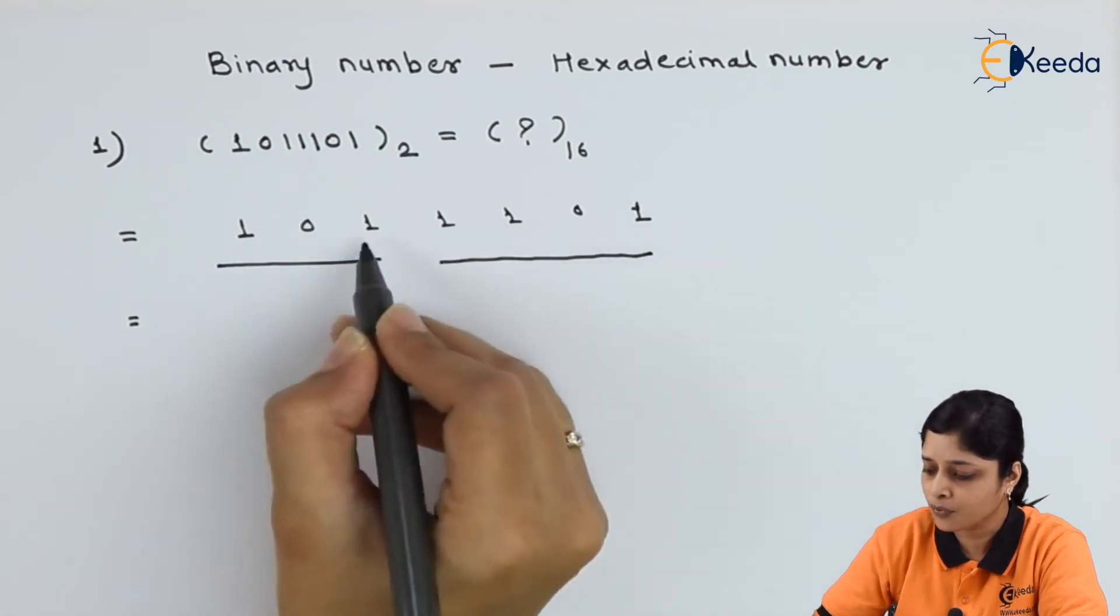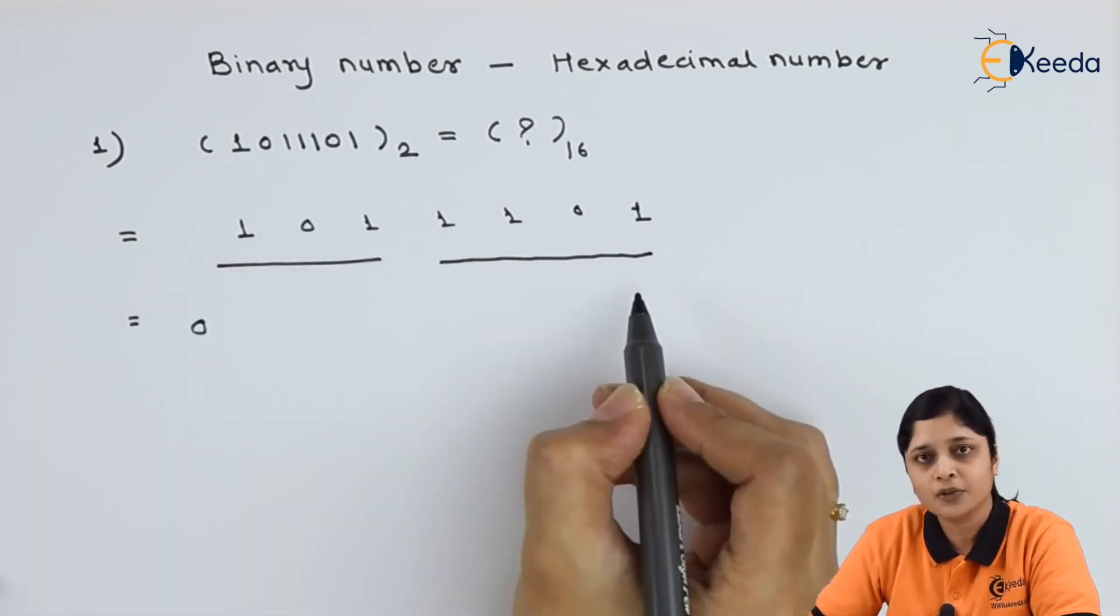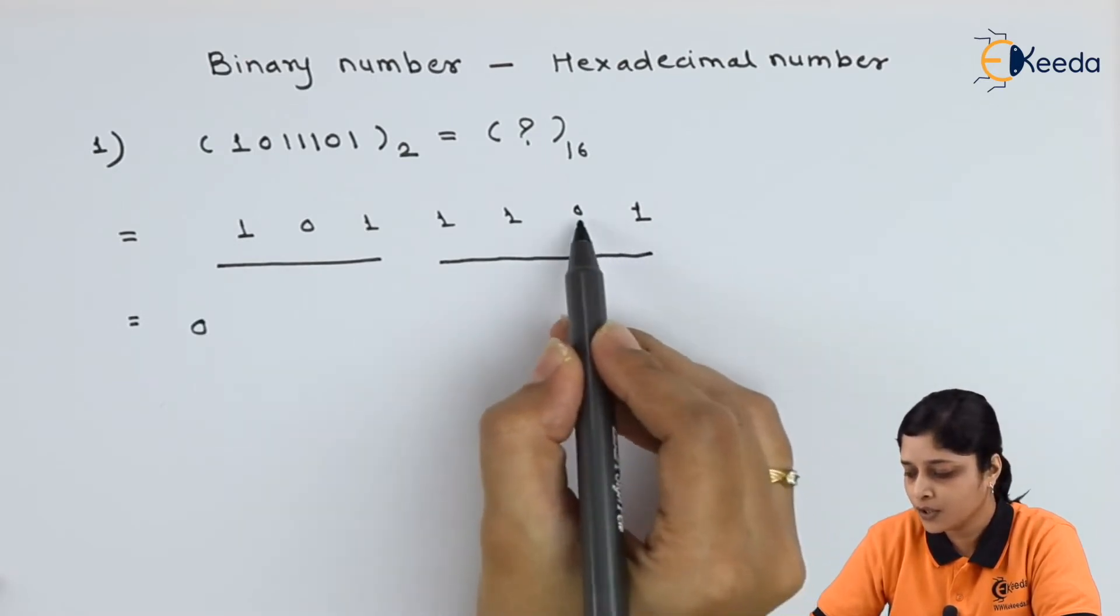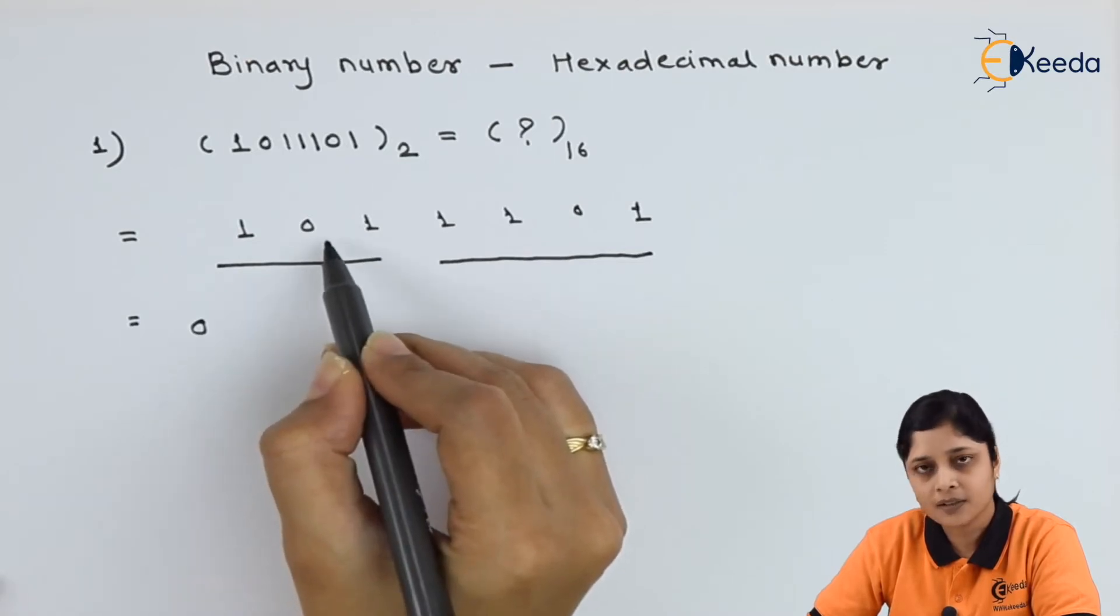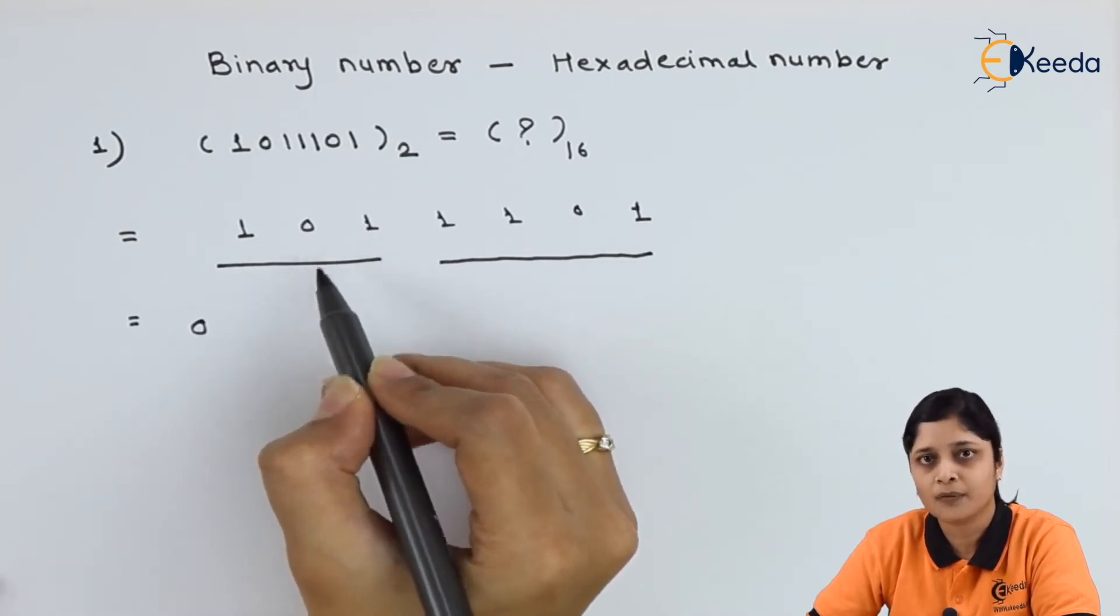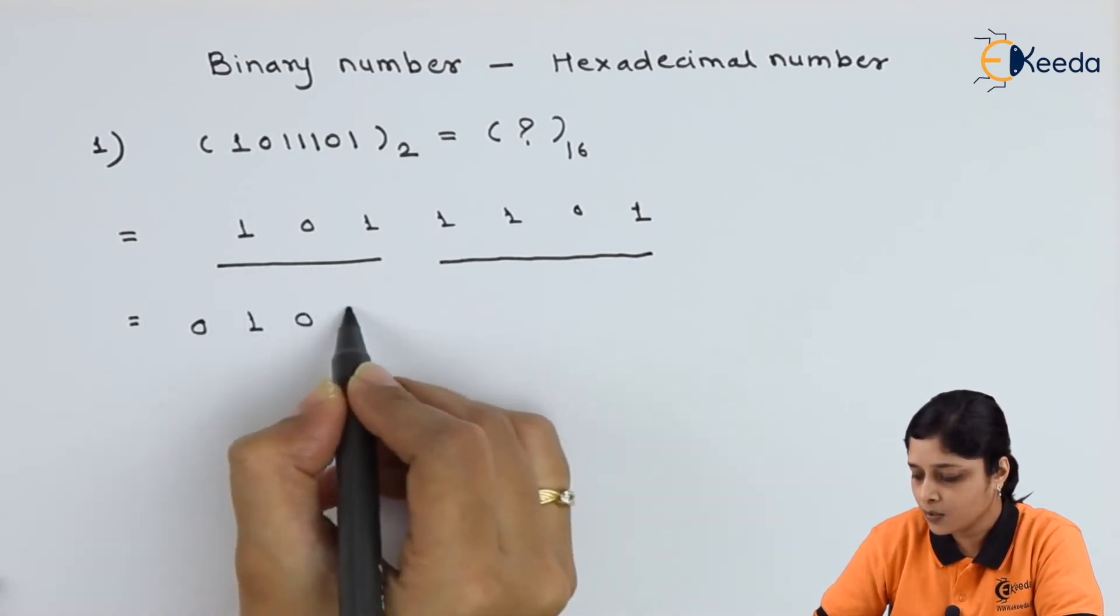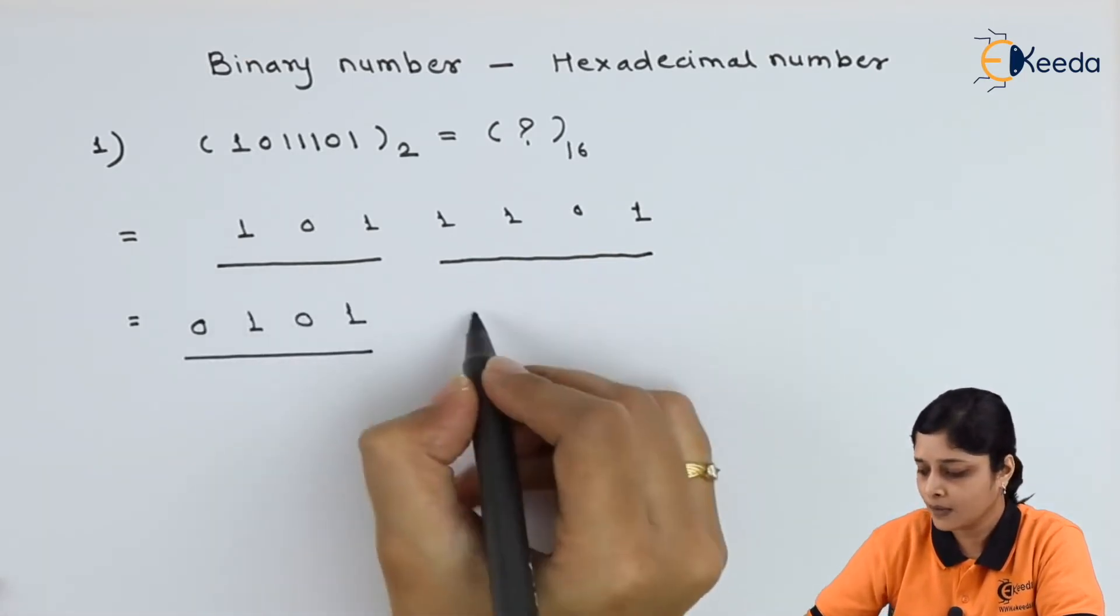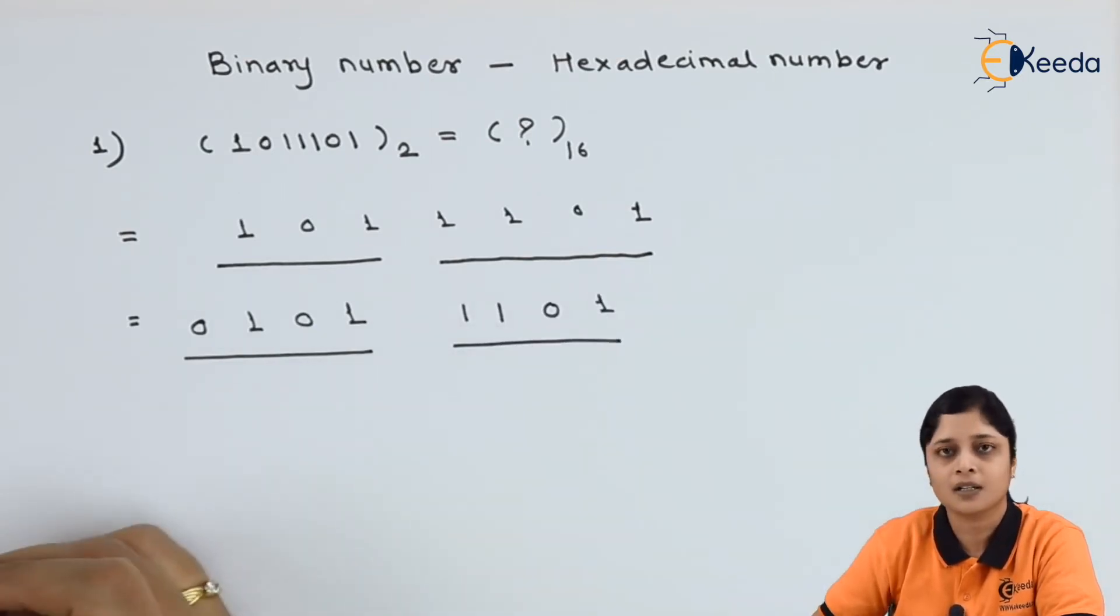You have to make a group of 4. 1, 2, 3, 4. 1, 2, 3. Here we require 1 extra 0. So here you have to make a group of 4. 1, 2, 3, 4. Then here only 3 bits are there. So you have to append 1 0. 0, 1, 0, 1 will give you one group. 1, 1, 0, 1 will give you another group.